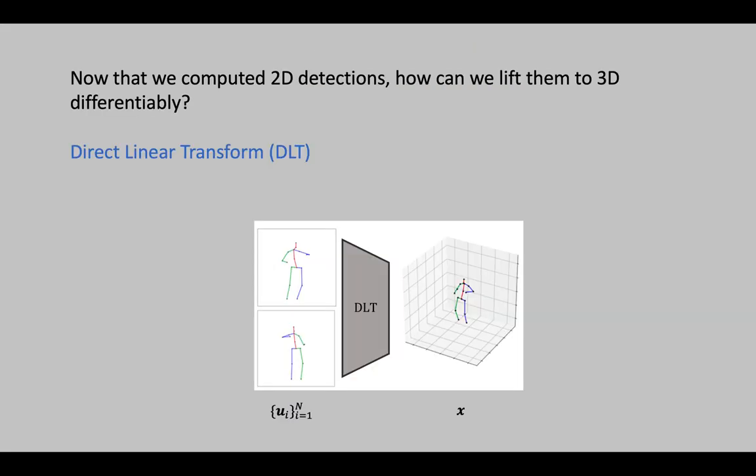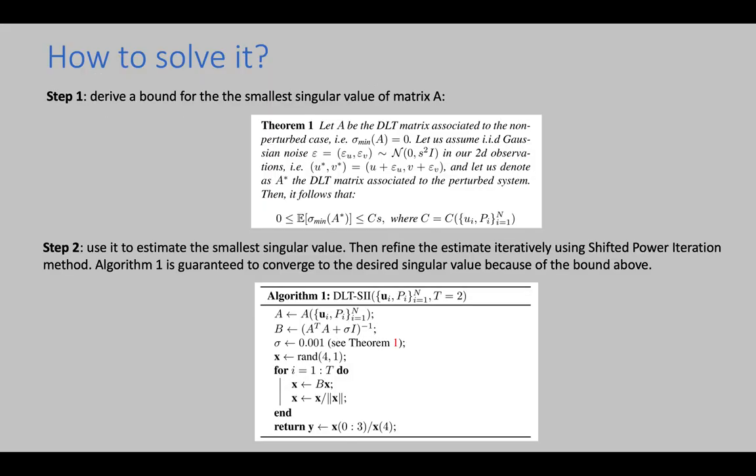Then we lift 2D detections to 3D by a direct linear transform. The DLT method boils down to solving a smallest eigenvalue problem. We do this efficiently through GPU-friendly shifted power iterations.